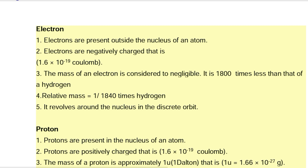Protons are closely bound in the nucleus. Neutron: (1) Neutrons are present in the nucleus of an atom. (2) Neutrons are neutral — there is no charge. (3) The mass of a neutron is nearly equal to the mass of a proton, that is 1 u (1 dalton), where 1 u = 1.66 × 10⁻²⁷ grams. (4) They are closely bound in the nucleus.